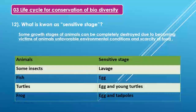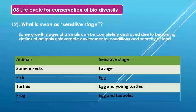For example, the larva stage is a sensitive stage of some insects. The sensitive stage of fish is the egg. Eggs and young turtles are the sensitive stage of turtles. To protect biodiversity, it is important to understand the sensitive stages of particular organisms. If we pay special attention to the sensitive stage of organisms, it will be easier to conserve those organisms and help protect biodiversity.